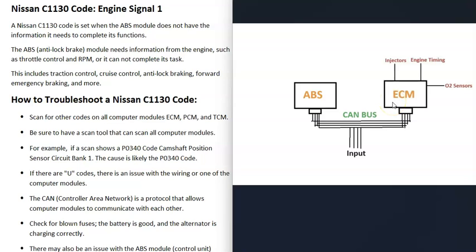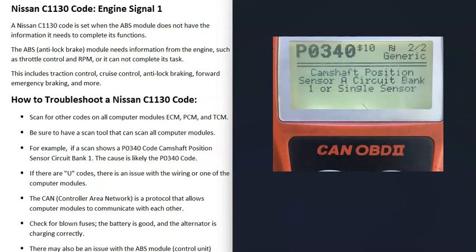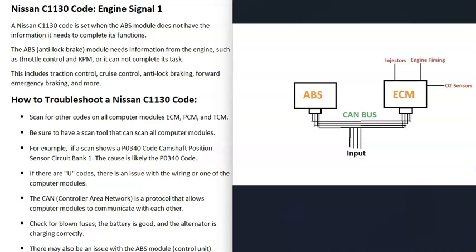Say there's some kind of problem going on with the engine and you go to scan for codes and you get a P0340 code which is a problem with the camshaft position sensor. When you get that code, the engine control module is not going to be able to calculate the RPMs and it's not going to be able to send this information to the ABS control module which needs that information to do its calculations, so it's going to send out this C1130 code.